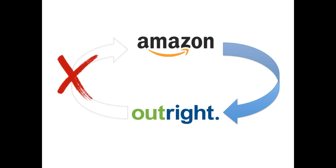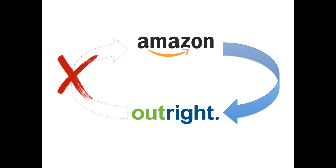The importing of data from Amazon into OutRight happens in two steps. First, there is a one-time import of historical data from your Amazon seller account into OutRight, which happens when you first connect your Amazon account. Thereafter, there is a nightly import which gets the latest transactions from Amazon into OutRight. This nightly import ensures that you have the most timely information about your Amazon business in OutRight.